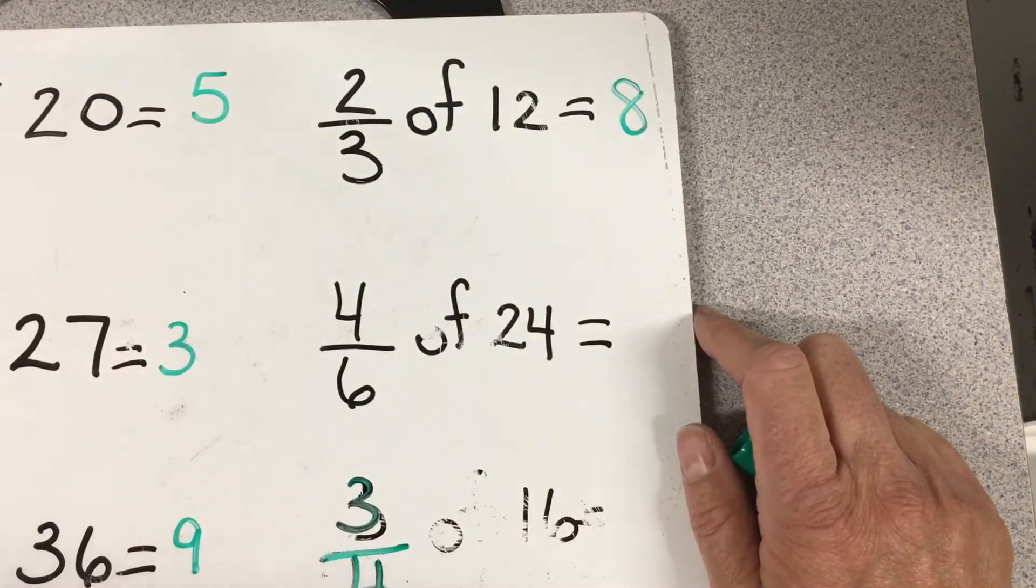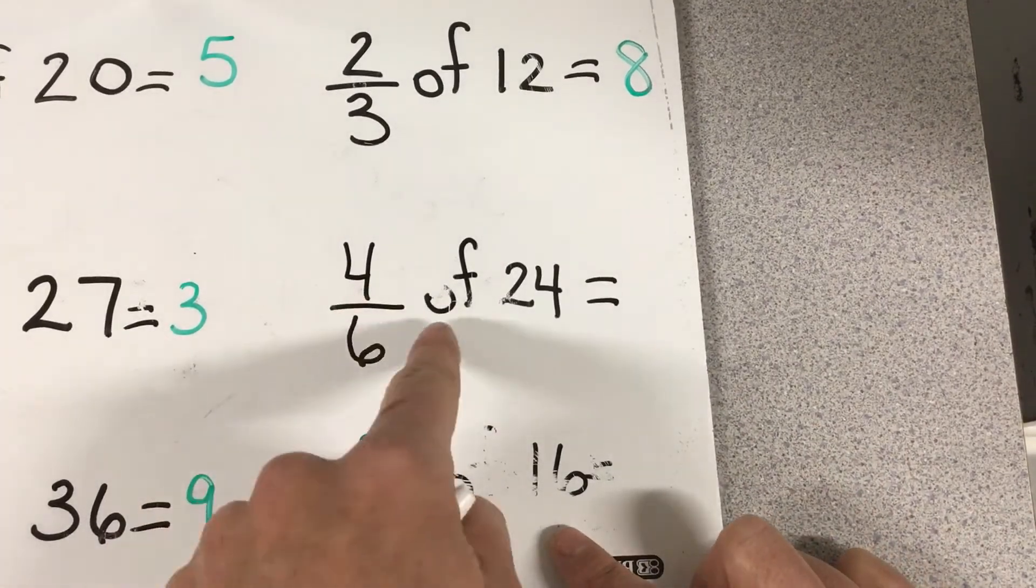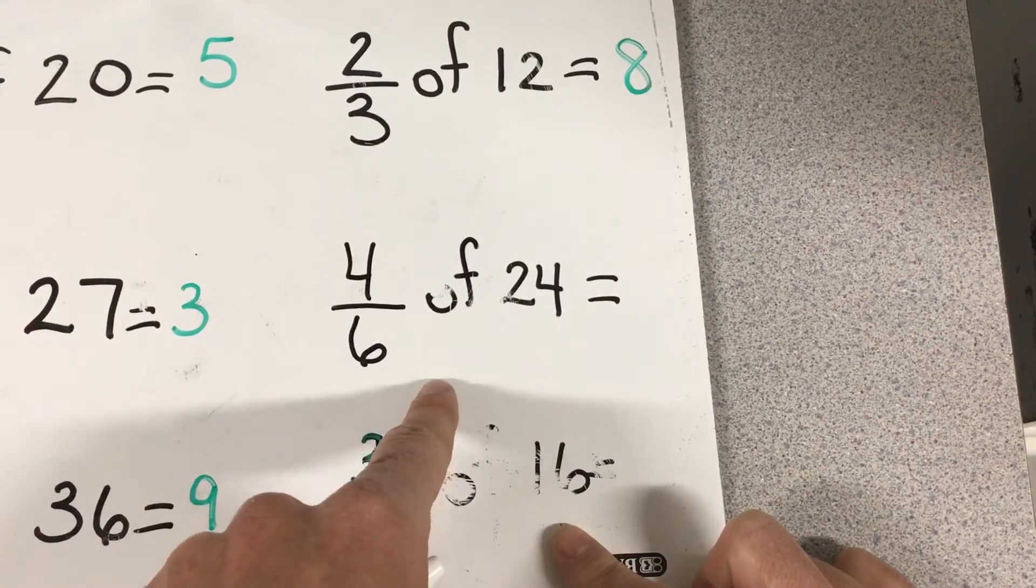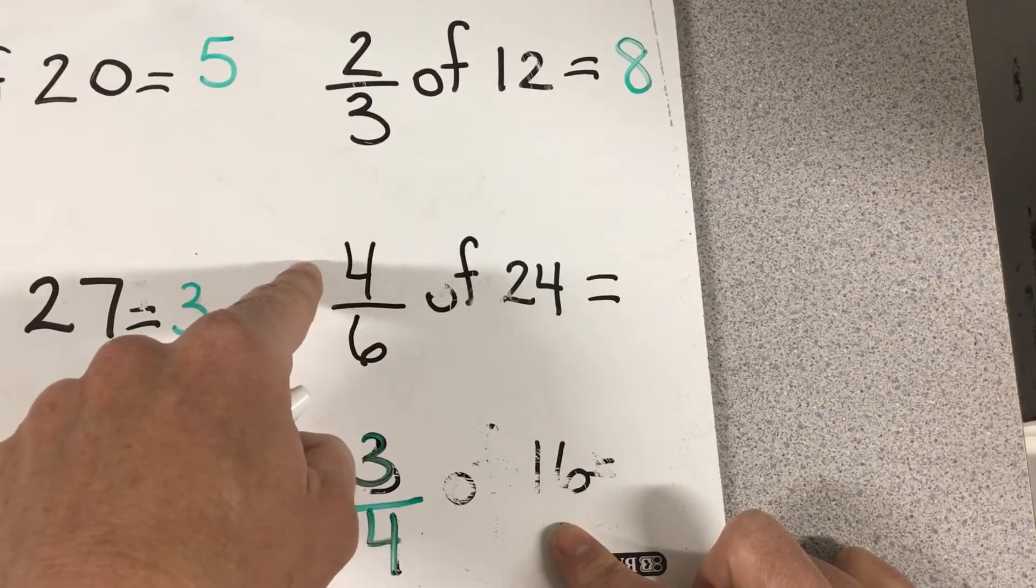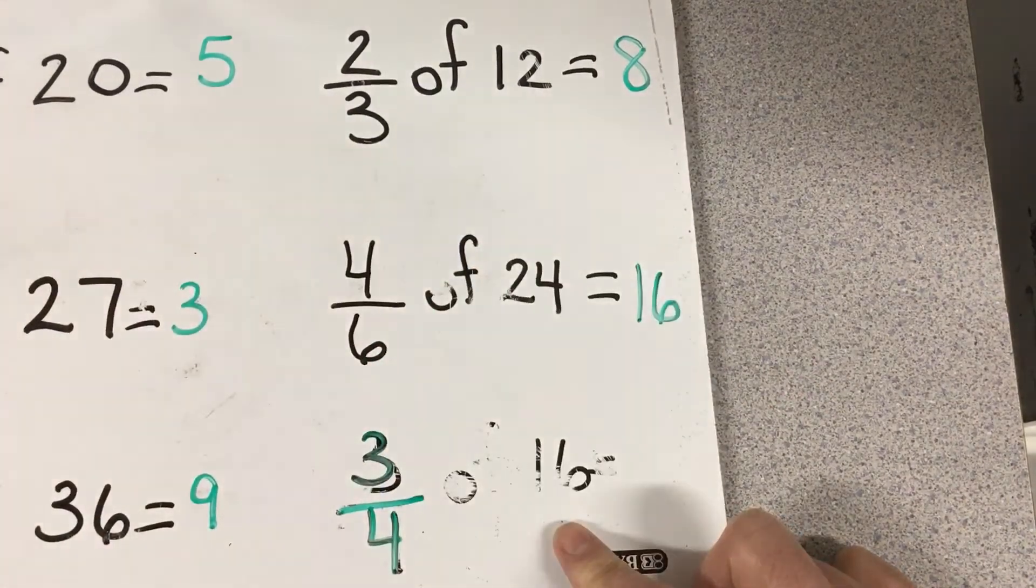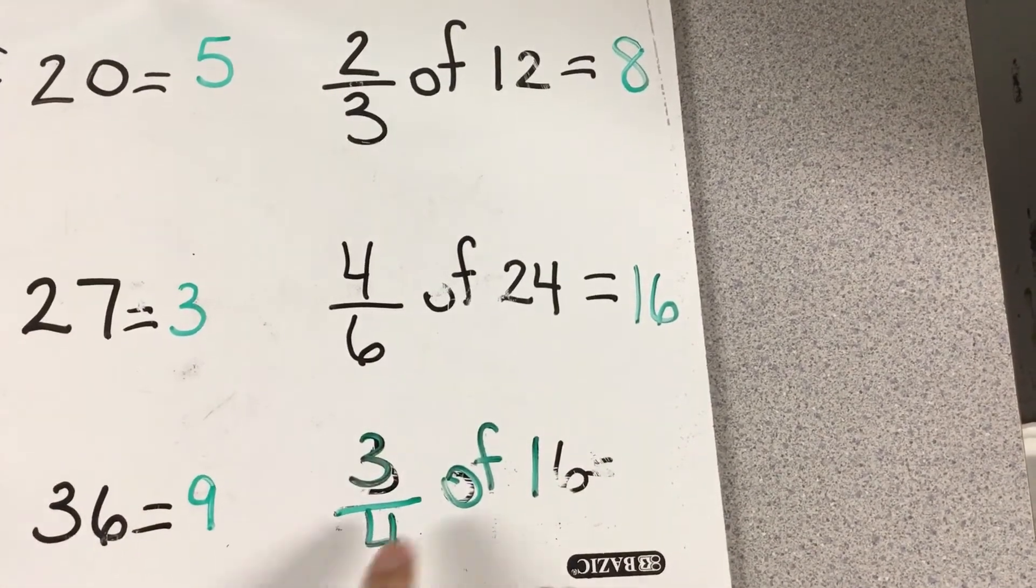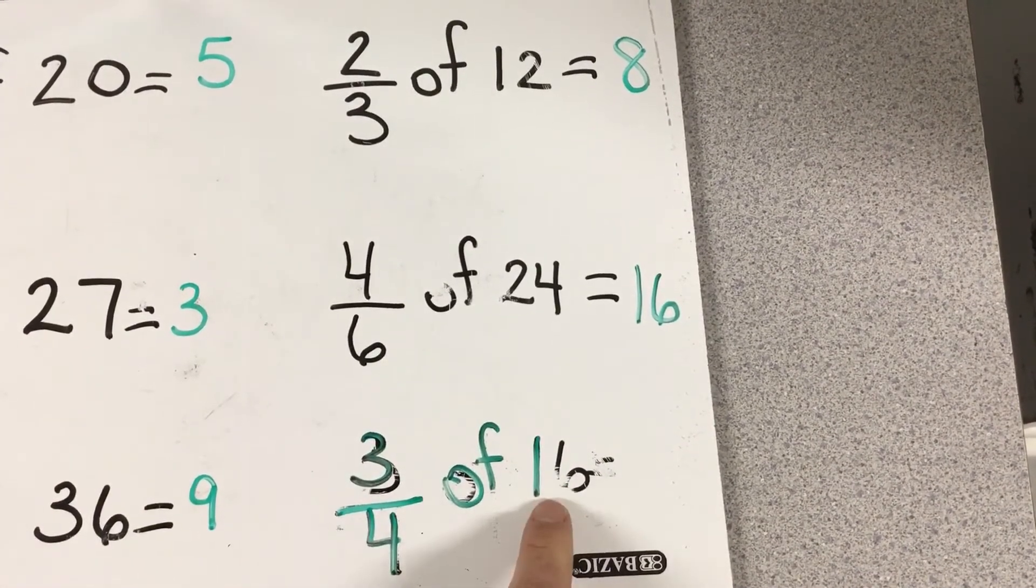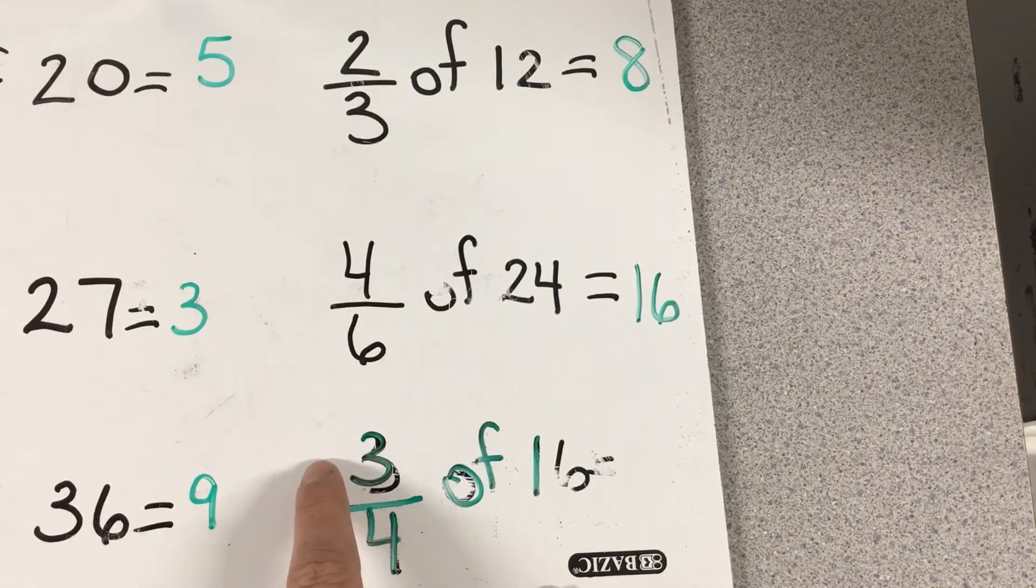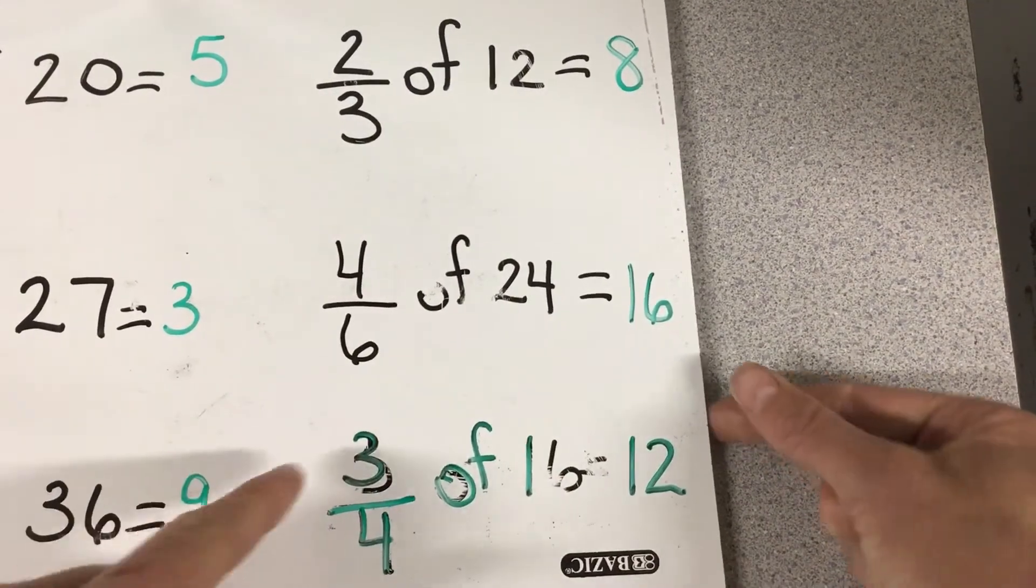Here we have 4/6 of 24. I'm going to take my 24 divided by 6 - 24 divided by 6 is 4 - multiply it by the top number 4, so 4 times 4 is 16. Now I have what's 3 quarters of 16, so I take my 16, divide it by 4, I get 4, multiply it by the 3 - 4 times 3 is 12.